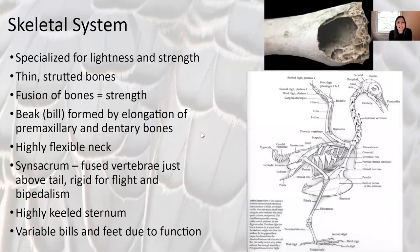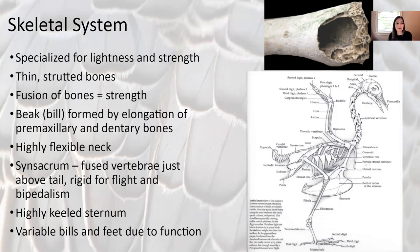The skeletal system of birds is specialized for lightness and strength to facilitate flight. They have thin strutted bones with air pockets, so they're much lighter, and several bones are fused to increase strength — the hand bones are fused, and some of the vertebrae are fused. The bill or beak is formed by the elongation of two bones: the premaxillary and dentary bones. A bird's neck is highly flexible. The synsacrum is those fused vertebrae — several vertebrae fused to make a really strong base for standing on two legs. It's what allows birds like ducks or turkeys, whose legs seem so far back, to not tip over.